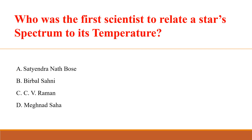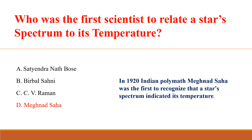Who was the first scientist to relate a star's spectrum to its temperature? Answer: D. Meghnad Saha. In 1920, Indian polymath Meghnad Saha was the first to recognize that a star's spectrum indicates its temperature.